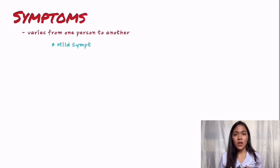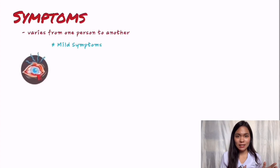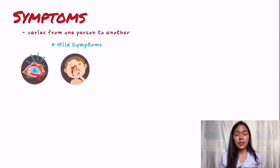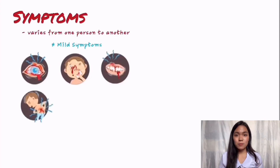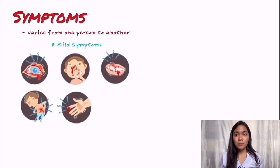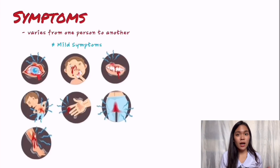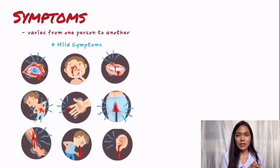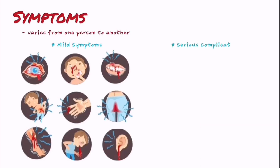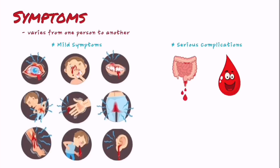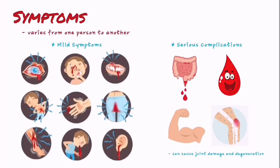Mild symptoms associated with von Willebrand disease include bleeding from the mucous membranes and skin, like nosebleeds and bleeding from the gums, easy bruising, and heavy and prolonged bleeding from minor cuts, during menstrual periods, childbirth, trauma, dental procedures, or surgery. More serious but uncommon complications can include gastrointestinal bleeding, solid swellings of congealed blood, and bleeding into the muscle and joints, which can cause progressive joint damage and degeneration.